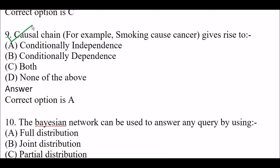Next question: Causal trend — for example, smoking causes cancer — gives rise to Option A: Conditional independence, Option B: Conditional dependence, Option C: Both, Option D: None of the above. Right answer is Option A — causal trends give rise to conditional independence.